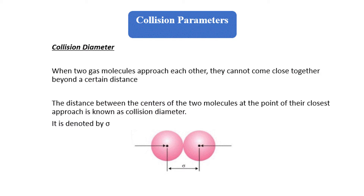Today we are going to discuss one of the collision parameters, that is collision diameter. What is collision diameter? According to kinetic molecular theory of gases, the gas molecules are always in random motion. When two such molecules approach each other, a point is reached at which the mutual repulsion between the molecules becomes